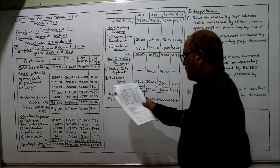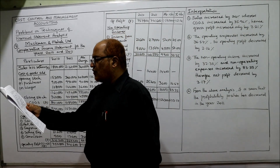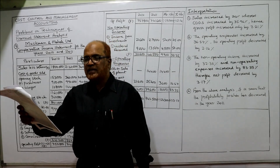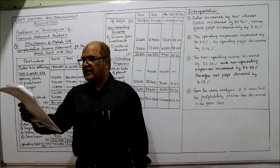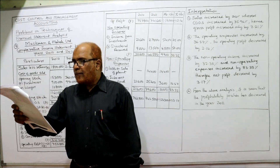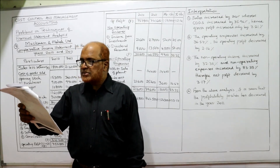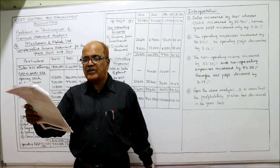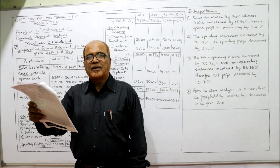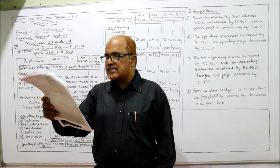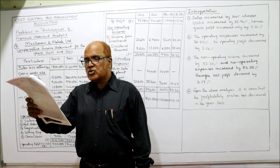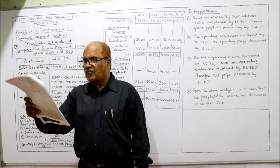See the fourth problem. The following is the profit and loss account of Muskan and Mahek Limited for the years 2010 and 2011 — last year 2010, current year 2011. We need to prepare a comparative income statement and comment on the profitability. The income statement is given with the credit side showing sales less returns, and the debit side showing opening stock, purchases less returns, and wages.